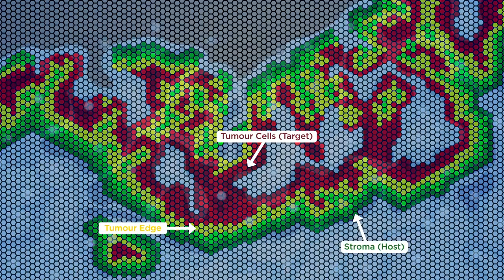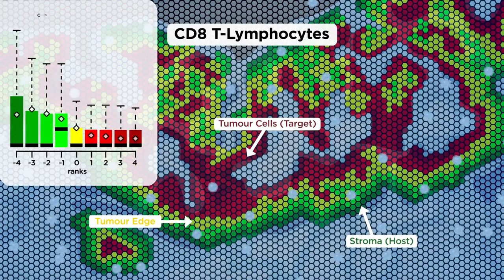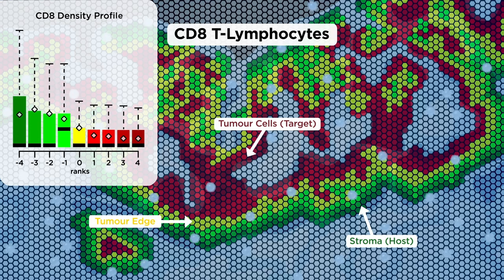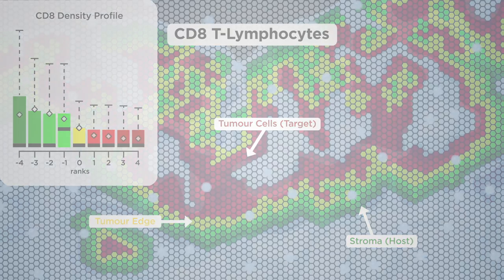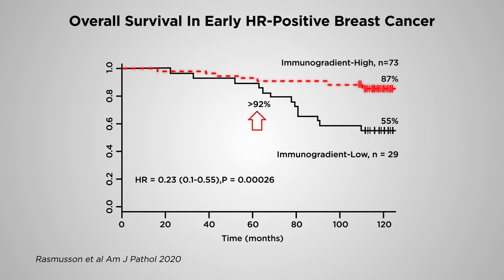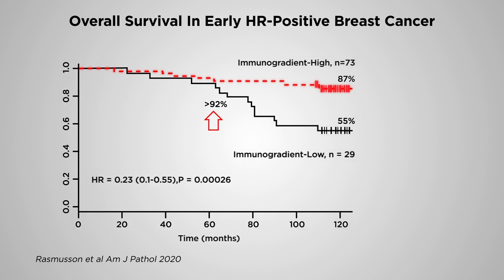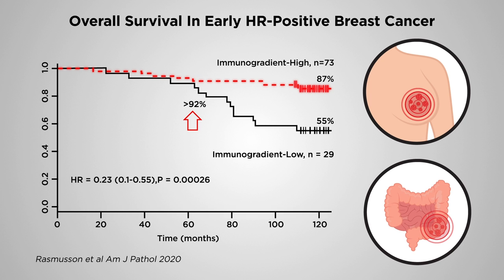This allows us to compute tumour infiltrating lymphocytes density profiles across the interface. The indicators, which express the toward-the-tumour gradient, were found to strongly predict long-term overall survival of hormone receptor positive breast cancer and colorectal cancer patients.